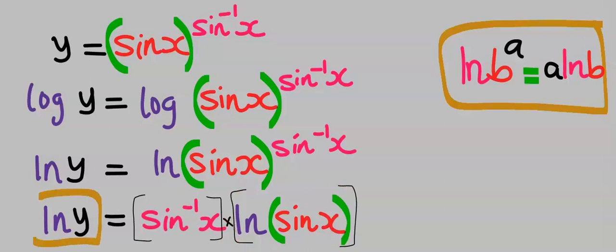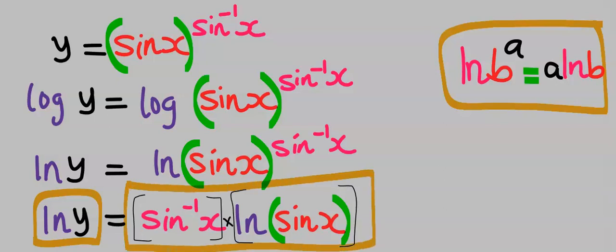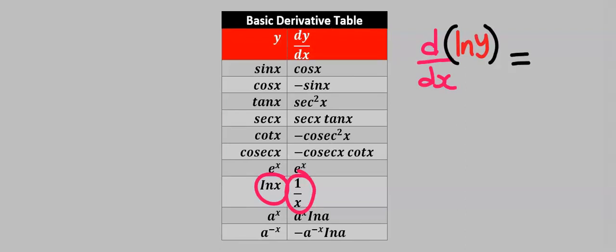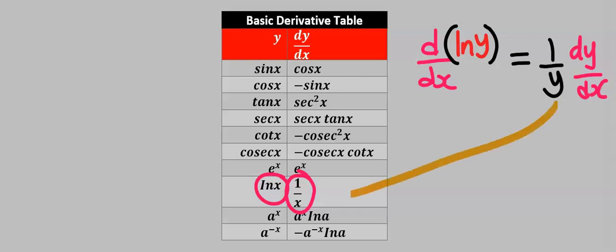On the left side, I will apply implicit differentiation, while on the right side, I will apply product rule. Differentiating y gives us 1 over y. We differentiated y, not x, and because of that, we multiply it with dy/dx according to the rule of implicit differentiation. From the basic derivative table, when you differentiate the natural log of x you get 1 over x, but if you differentiate the natural log of y you get 1 over y, then multiply by dy/dx.